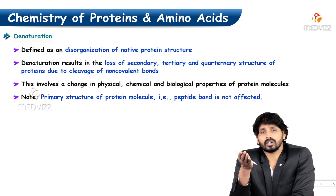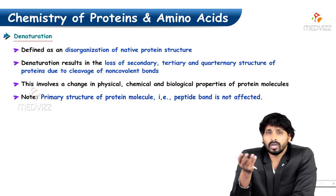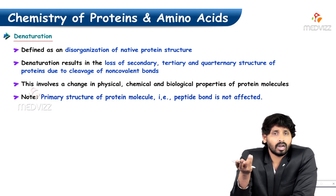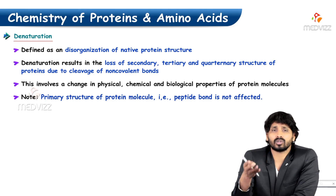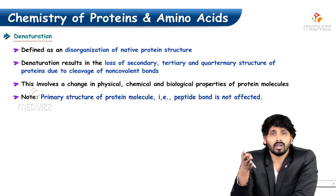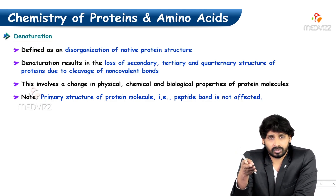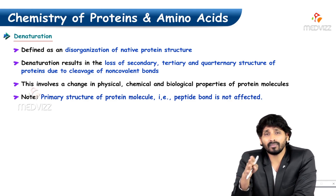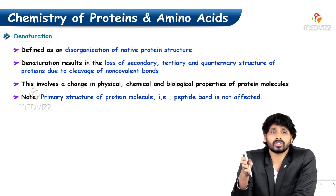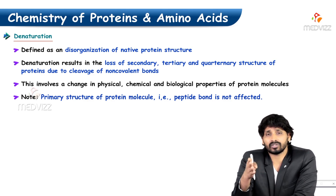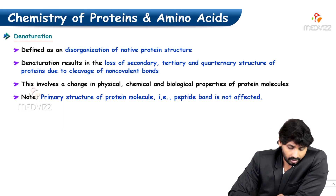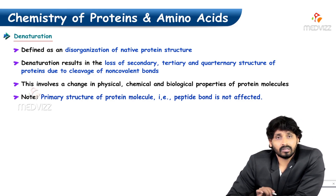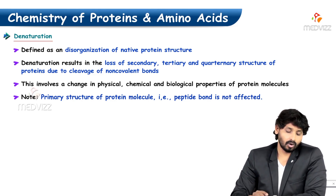The primary structure contains only peptide bonds, so you cannot disturb that structure unless by using hydrolytic enzymes such as digestive enzymes like trypsin, chymotrypsin, or peptidases. Apart from that, you can easily disturb secondary, tertiary, and quaternary structure by using external forces or chemicals. The disorganization of native protein structure can be termed denaturation.